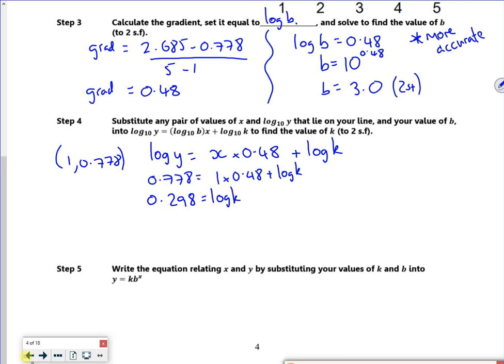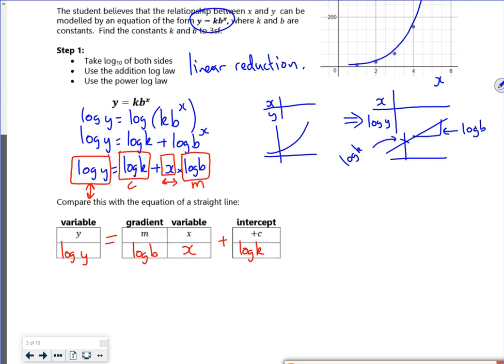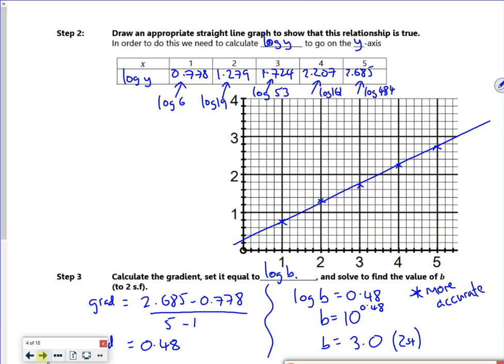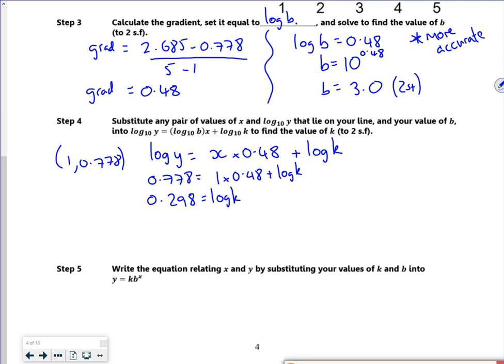And if I go back to my equation, my equation of a straight line, I said that the intercept was log k. So log k is my intercept. So if I do 10 to the power of 0.2, which works out roughly 2 to 2 significant figures.